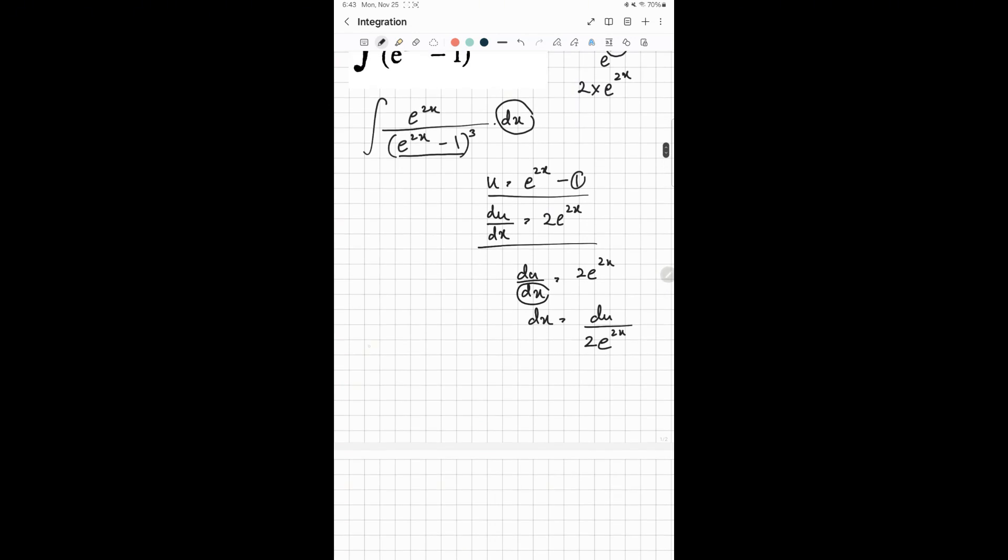So then let's write the question again. e^(2x) over (e^(2x) - 1)^3 dx. So instead of dx, you just put in du over 2e^(2x). You can see e^(2x) cancels off.